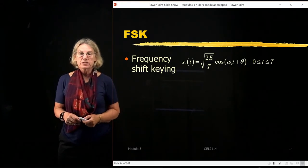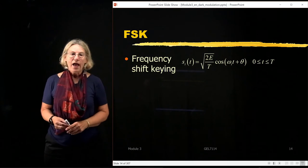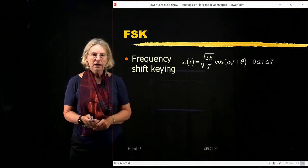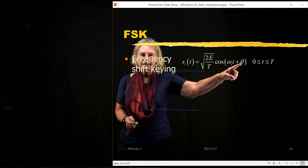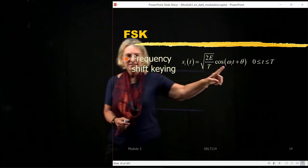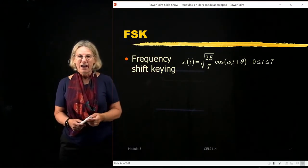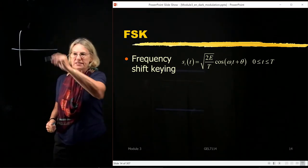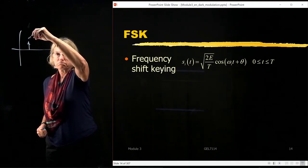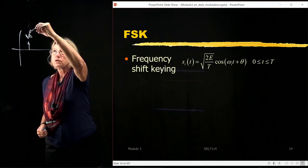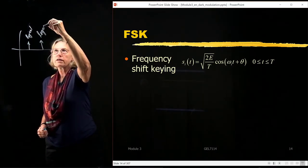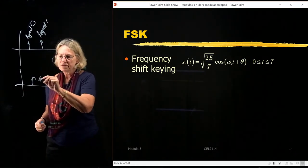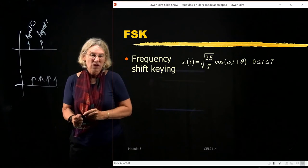Just from the geometric signal space representation, we can see that larger M compromises performance. The next modulation format is frequency shift keying, or FSK. Here the information is coded on the frequency rather than the phase. For binary FSK, one frequency represents a logical zero and another represents a logical one. For M-ary FSK, I have M distinct frequencies, each representing a different symbol.